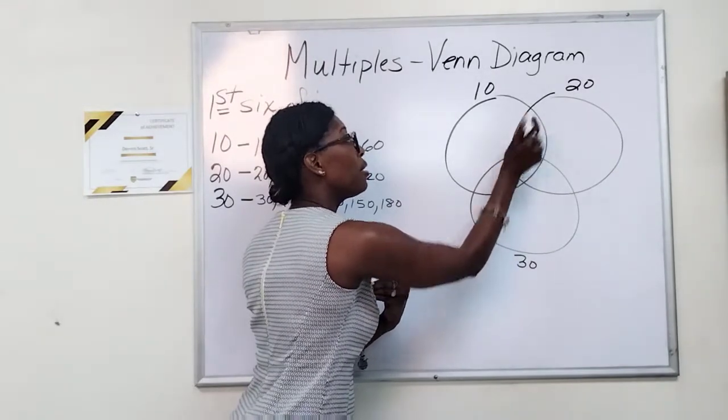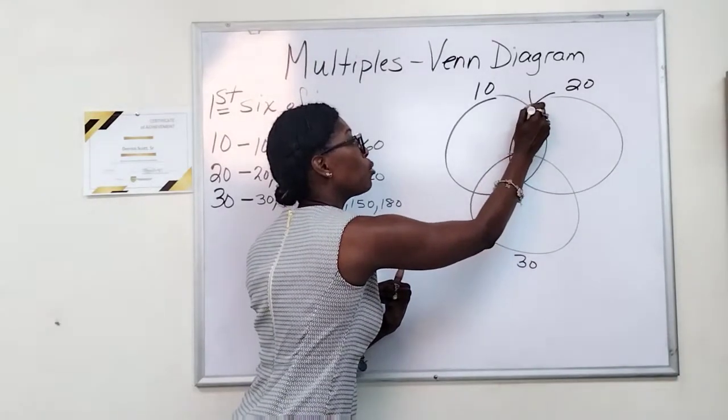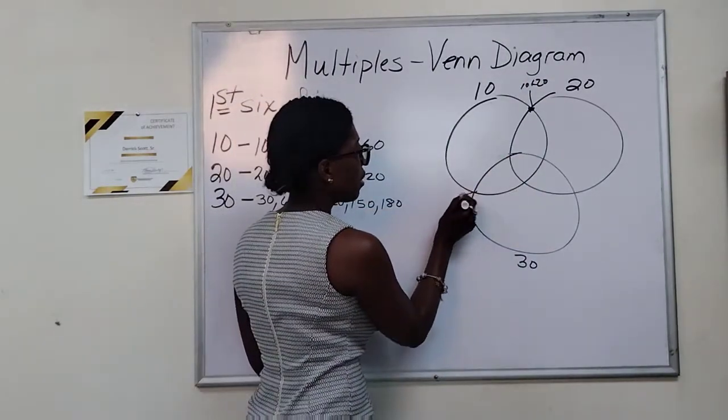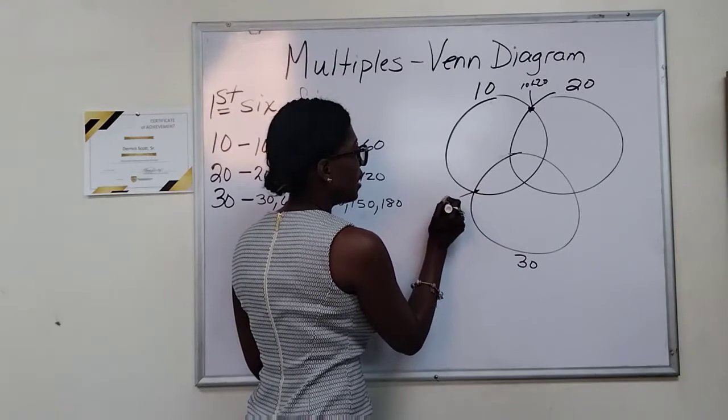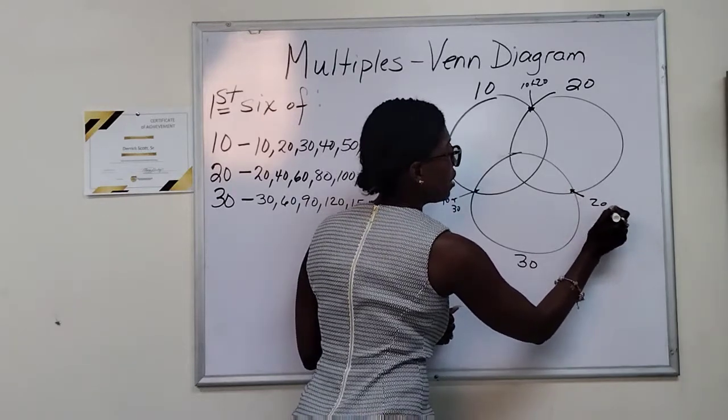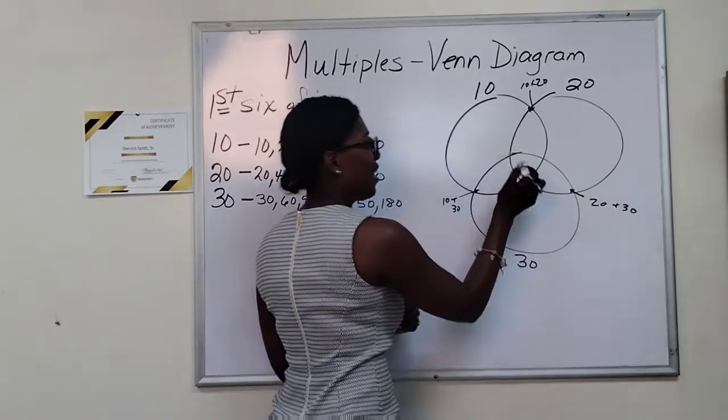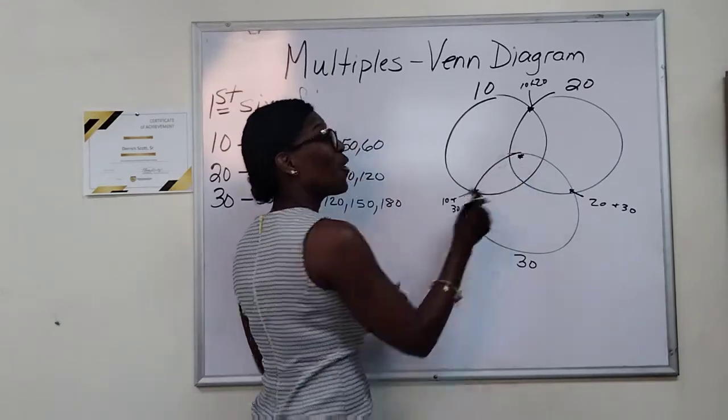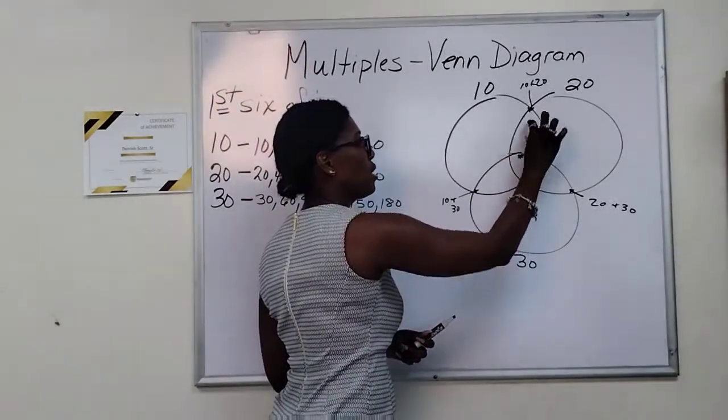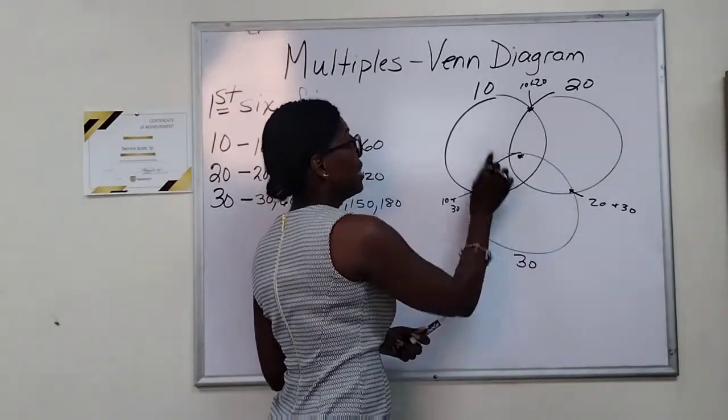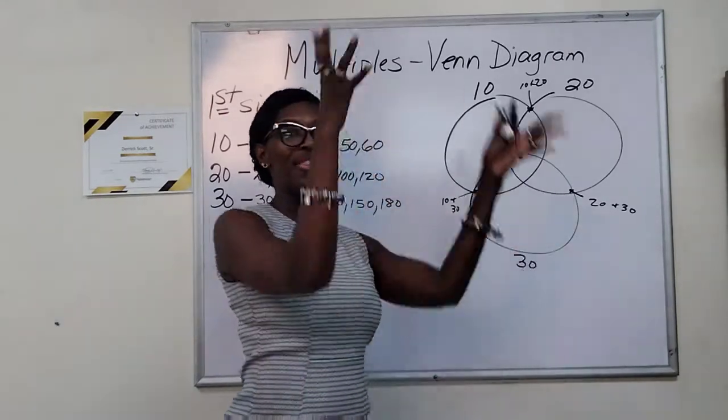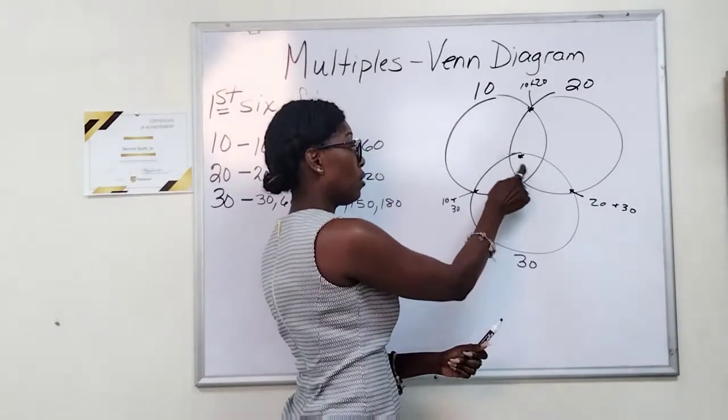This space here, multiples of 10 and 20. Here, 10 and 30. Here, 20 and 30. And this special place here is for all of them. That's where they all connect. So again, 10 and 20 connects here. 10 and 30 connects here. 20 and 30 connects here. And they all connect right there in the middle.